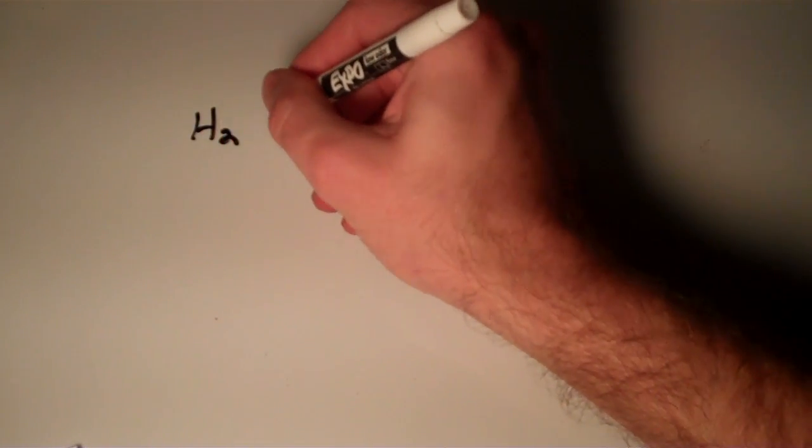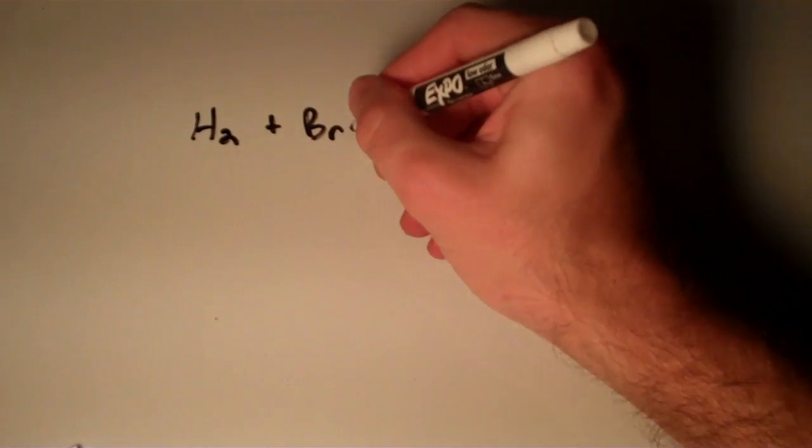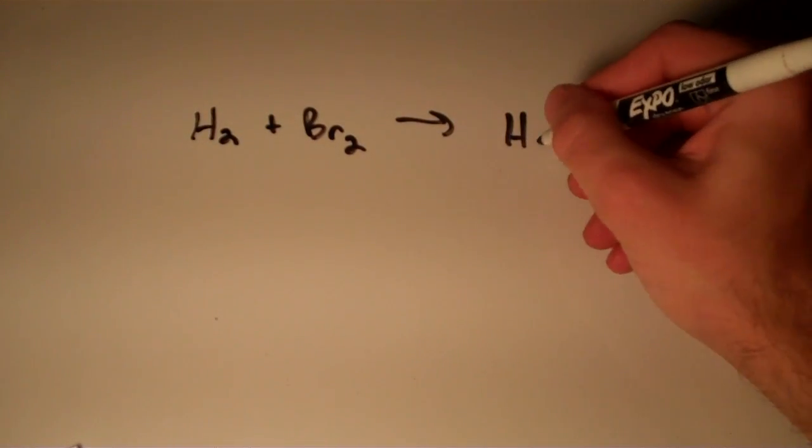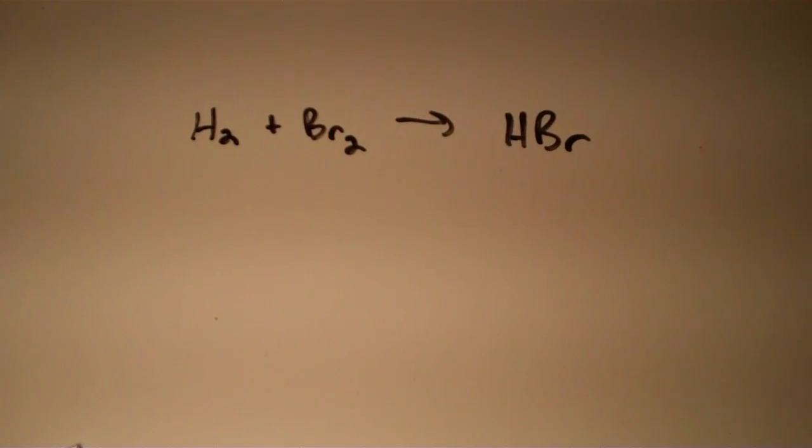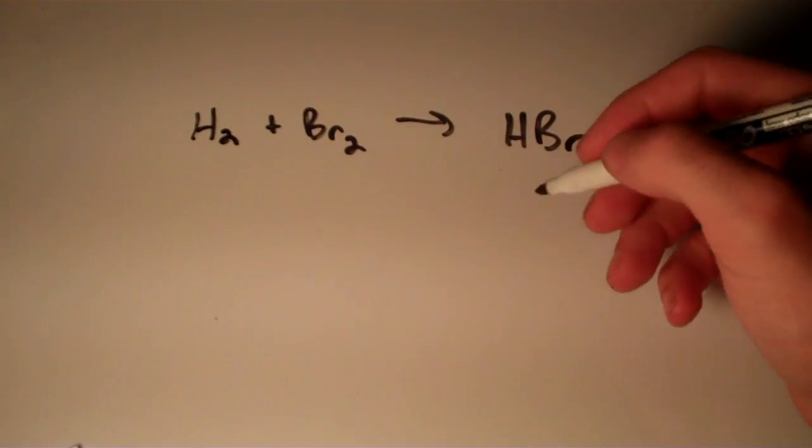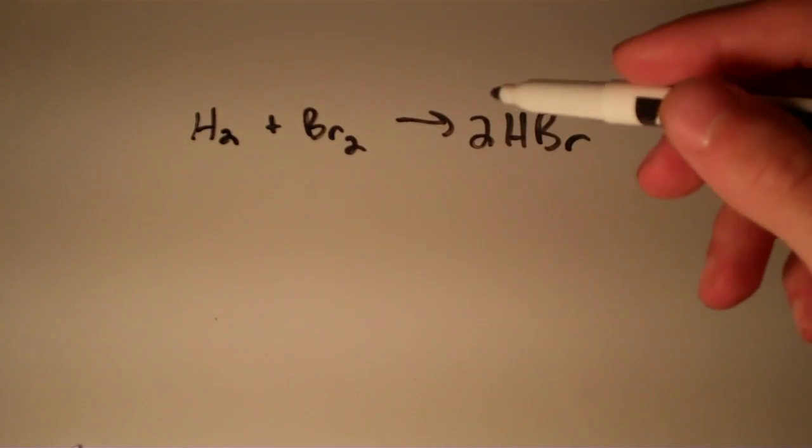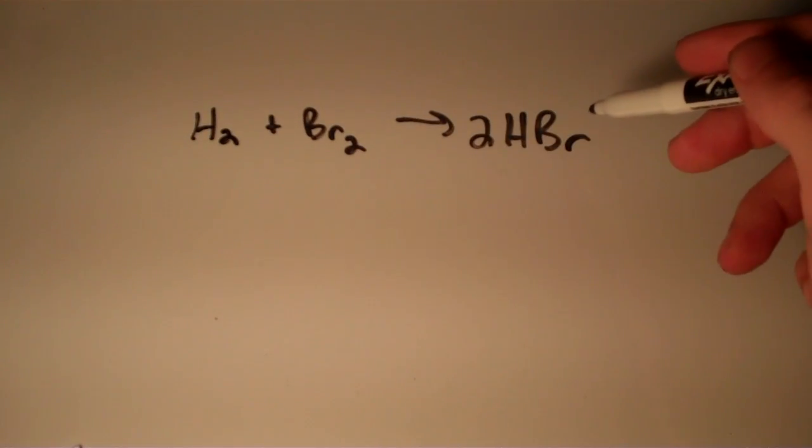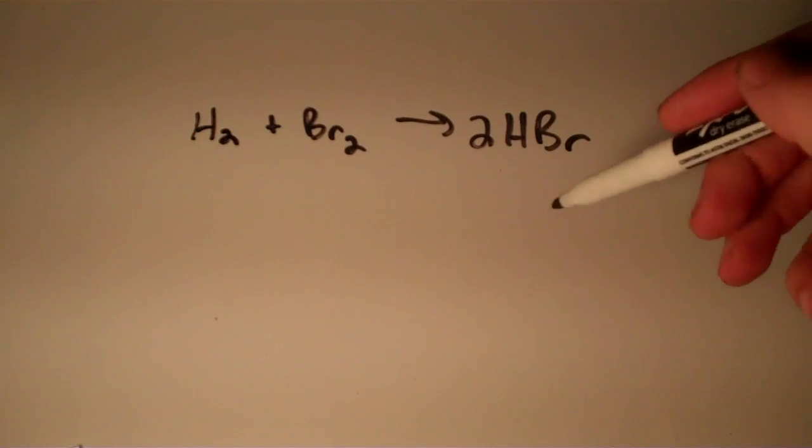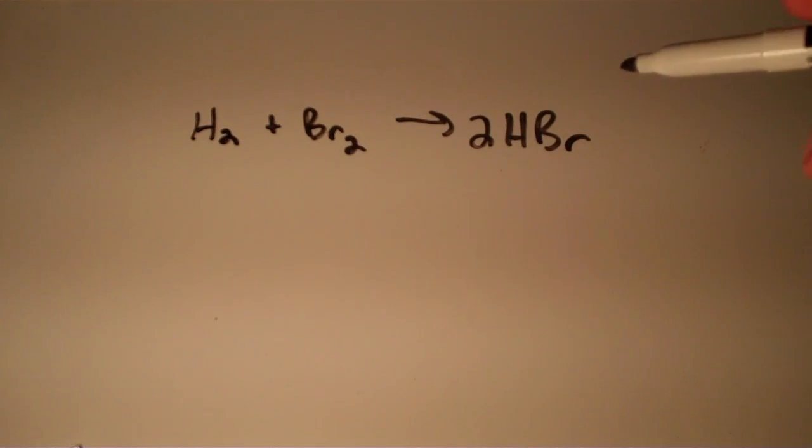Suppose I have the following chemical reaction: H₂ plus Br₂ yields HBr, and I've got to put a 2 here to balance it. On the left side of the equation you have reactants—those are getting used up—and on the right side of the equation you have products, and those are becoming formed as the reaction proceeds.